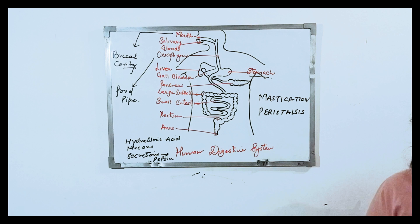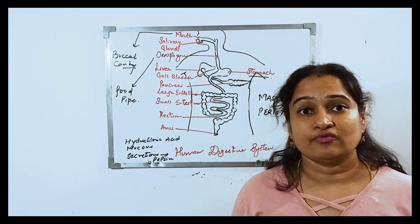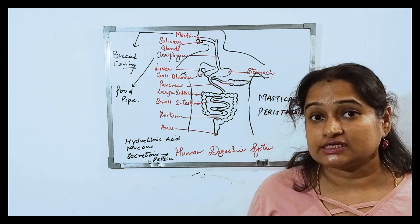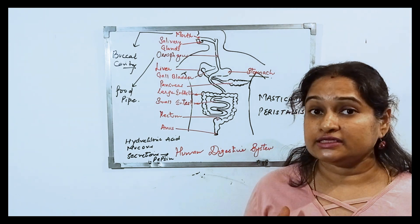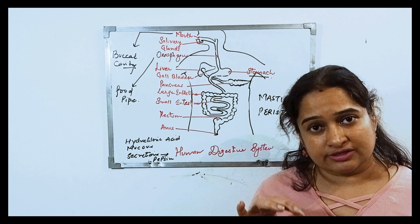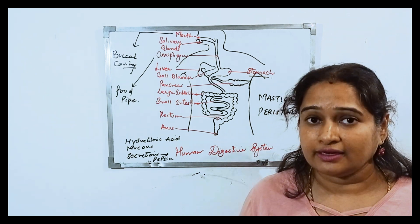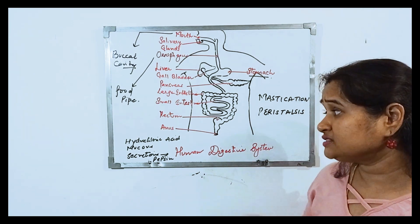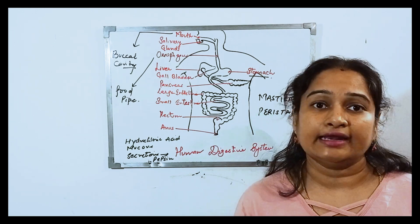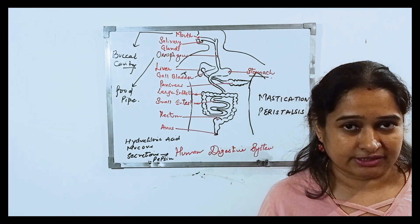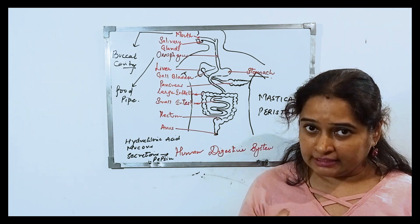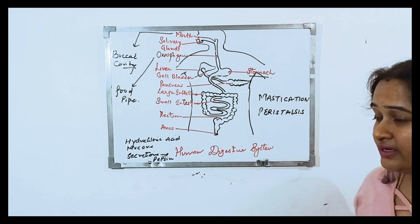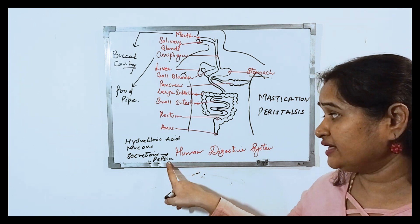Hydrochloric acid is produced from the walls of the stomach because the food has to be digested in an acidic medium, and also to kill any bacteria present in the food. Mucus is produced to protect the lining of the stomach from being attacked by the HCl, which might otherwise be dangerous. The third secretion includes the enzyme pepsin.